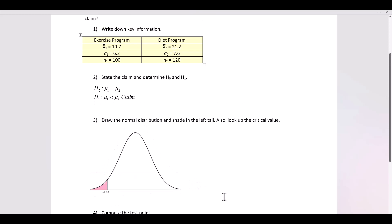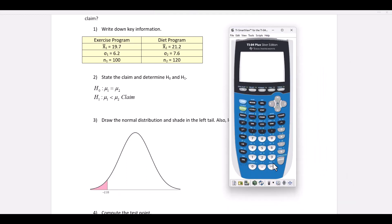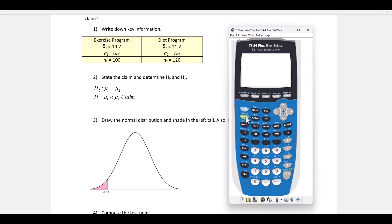Next, we will use the calculator to compute the test value. To use the calculator, we do the following. We press stat, select test, select number 3, two-sample Z test, select the stats option, type in the first standard deviation, 6.2, type in the second standard deviation, 7.6.